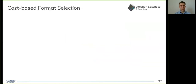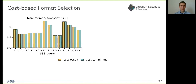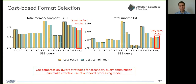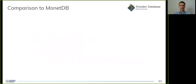Looking at our cost-based format selection strategy, we compare our cost-based format decision to the actual best format decision. For memory footprints, we achieve quasi-perfect results with our selection strategies. For runtimes, the format combination determined by our cost-based approach is usually only a few percent worse than the actual best combination, and results are very good on average. This means our compression-aware strategies for secondary query optimization can make effective use of our processing model. Finally, we compared query execution in MorphStore to MonetDB, because it is the column store with the most similar processing model to ours in terms of purely uncompressed processing.